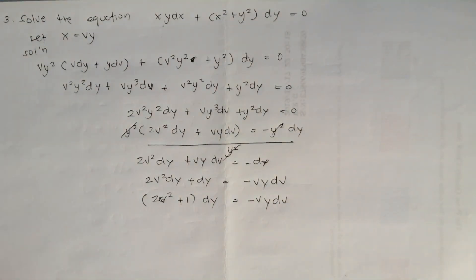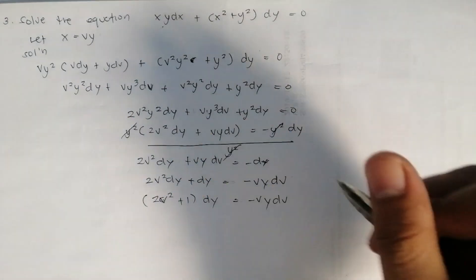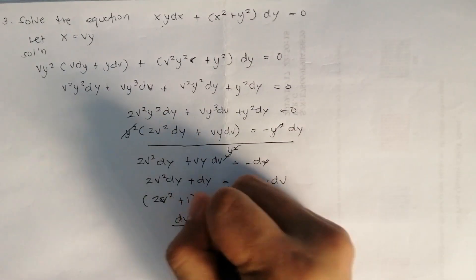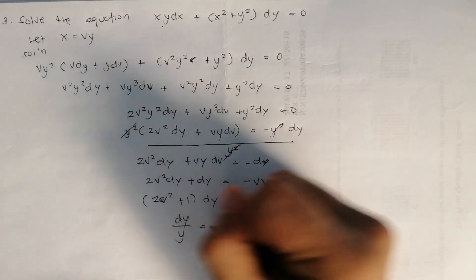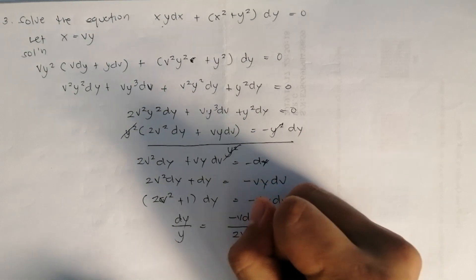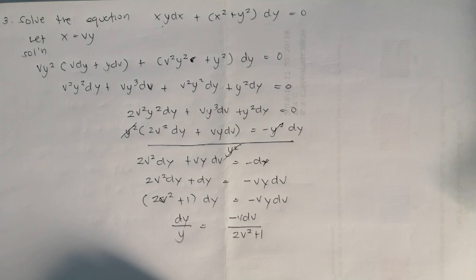Since this is now variable separable, we separate the variables: dy over y equals negative v dv over (2v² plus 1).